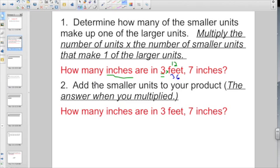And then it says, add the smaller units to your product. Our product was 36, right? The answer when we multiplied. So 36 plus seven more inches is going to give you a total of 43 inches, right? 36 plus seven is going to be 43.